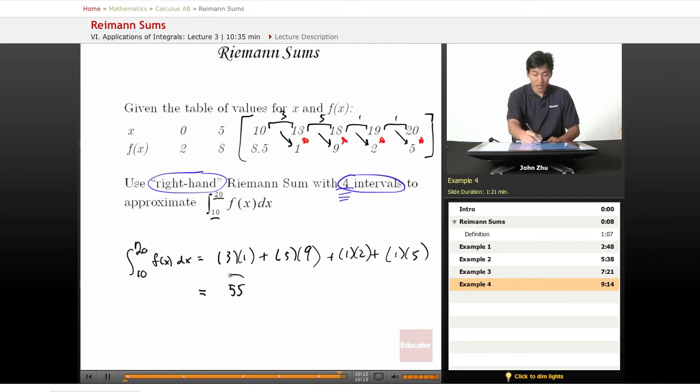Which is a higher approximation. So the right-hand rule gives a higher result than the left-hand rule, which means our graph most likely is an increasing function.